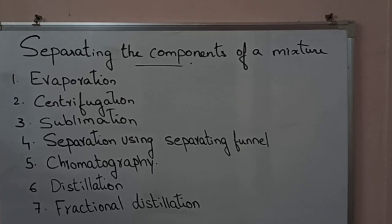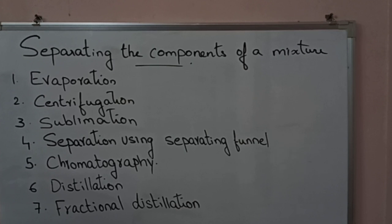Distillation method is used to separate two miscible liquids having a sufficient difference in their boiling points. For example, if liquid A boils at 20 K and liquid B boils at 100 K, we can use the distillation method, provided both liquids are miscible.